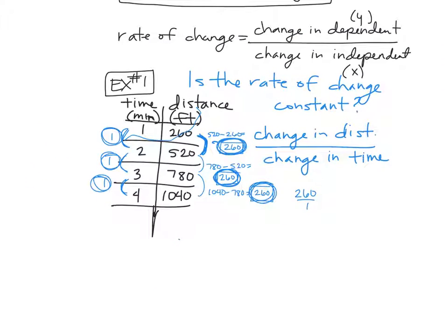So when it asks is the rate of change constant, our answer would be yes because our rate of change was always 260 over 1.